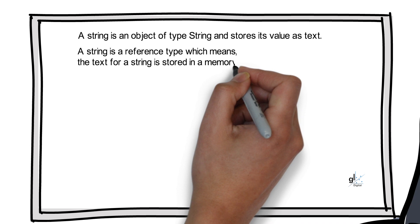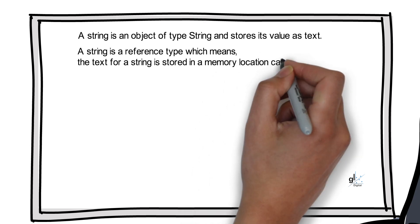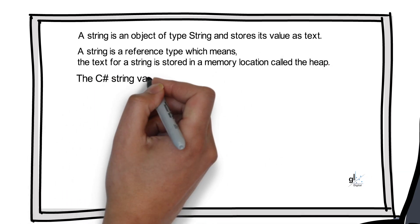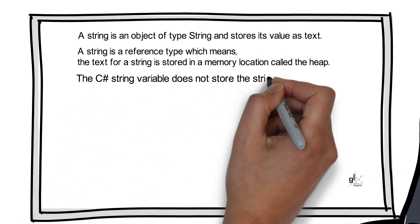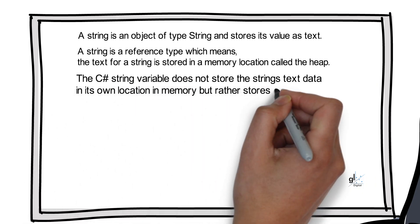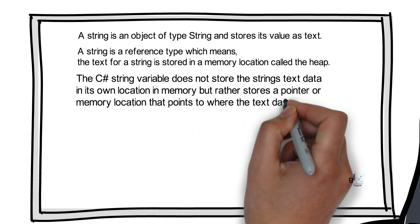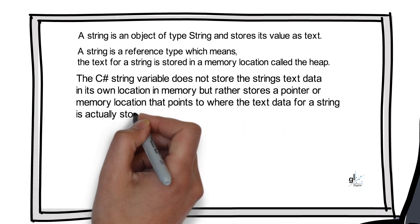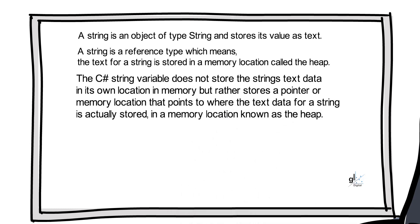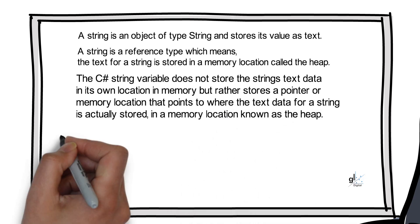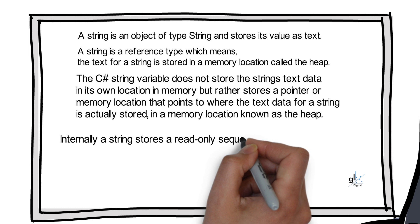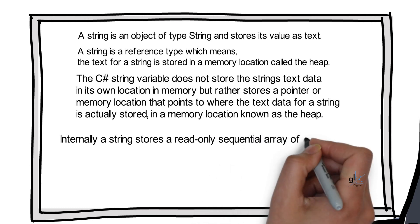The C-sharp string variable does not store the string's text data in its own location in memory, but rather stores a pointer or memory location that points to where the text data for the string is actually stored in a memory location known as the heap. Internally, a string stores a read-only sequential array of char objects.